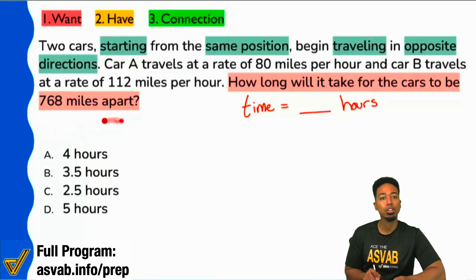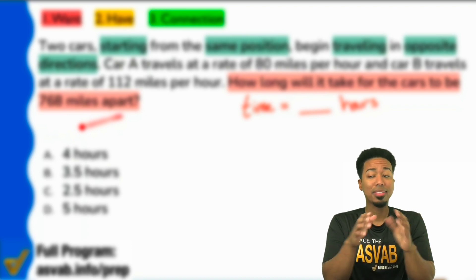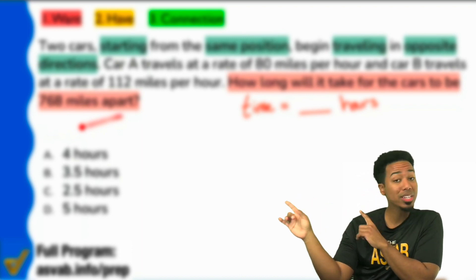And then car B, 112 miles per hour, and then we have this last number over here, 768 miles apart.